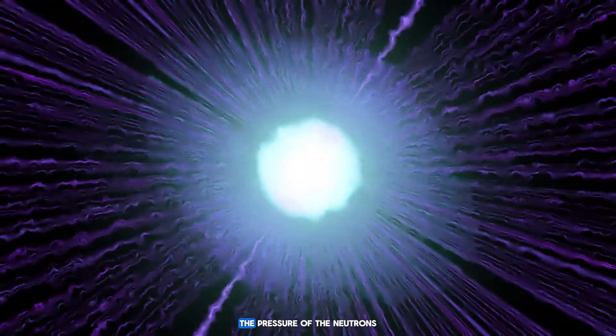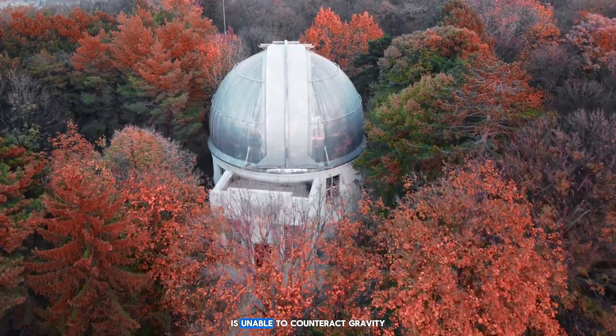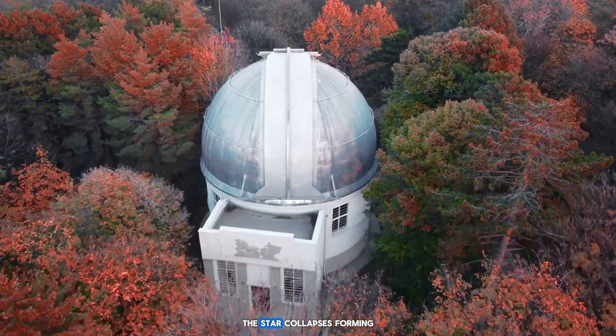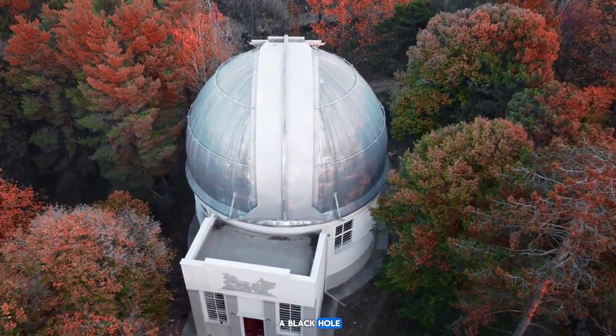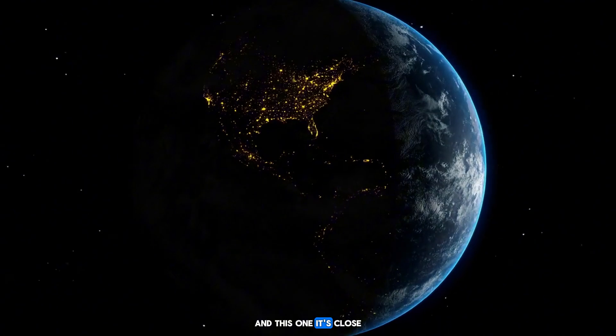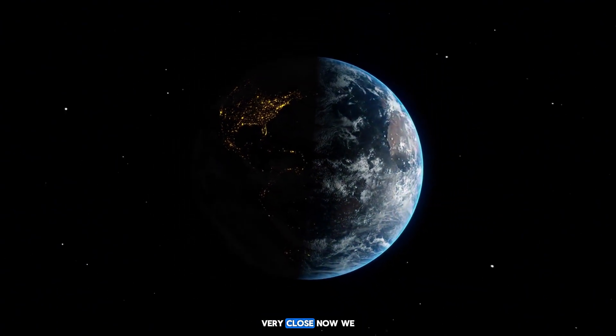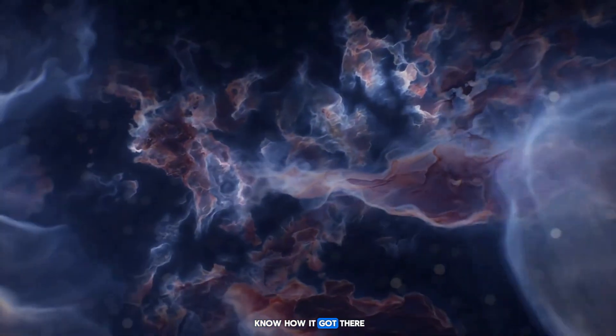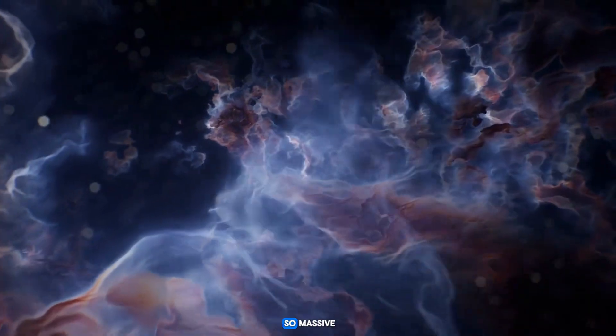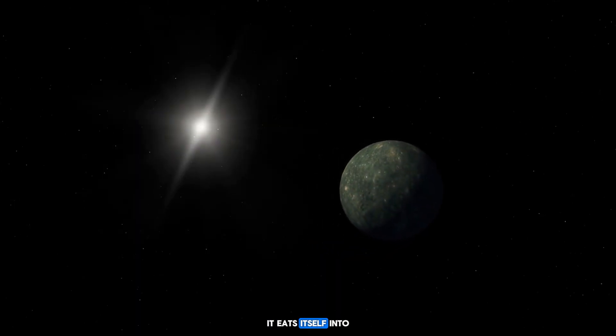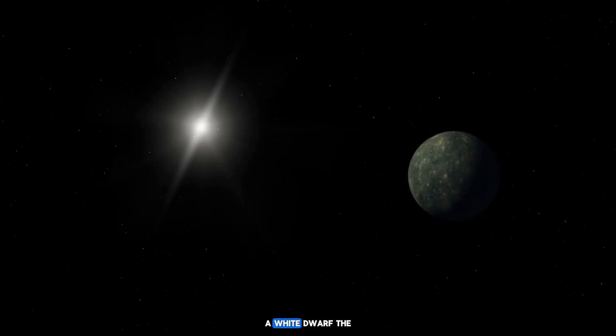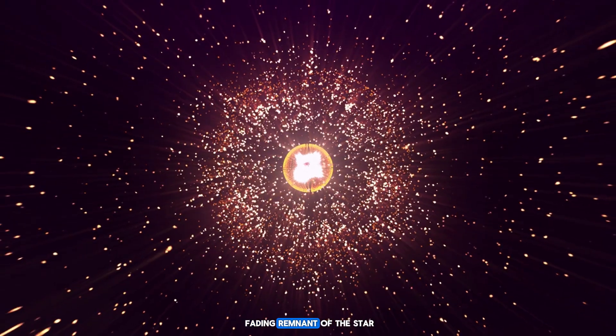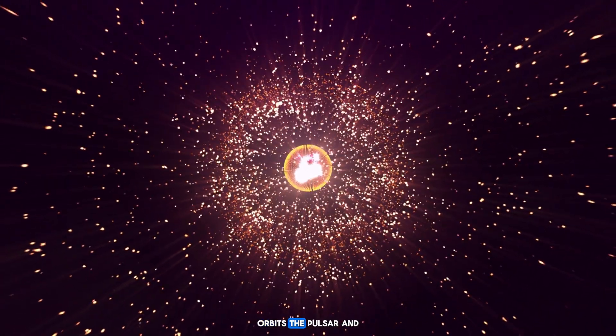Once this value is exceeded, the pressure of the neutrons is unable to counteract gravity. The star collapses, forming a black hole. And this one—it's close, very close. Now we know how it got there. It didn't start out so massive. It eats itself into this state.